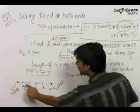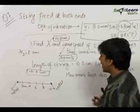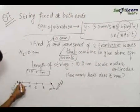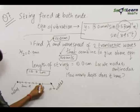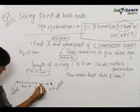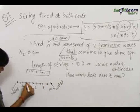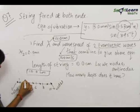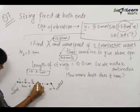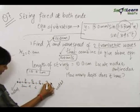So, the total number of nodes that we have is 6. Now, the antinodes come in between 2 nodes. These are the positions of antinodes: at 1 centimeter, 3 centimeters, 5 centimeters, 7 centimeters, and 9 centimeters.